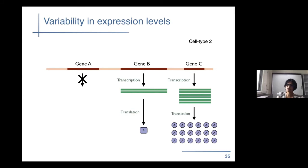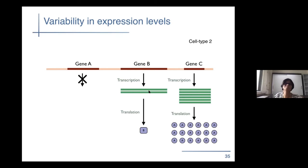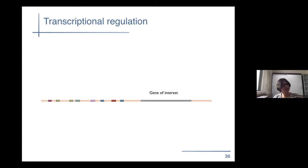A lot of this regulation or control is happening at the transcriptional level — at the place where the photocopies are being made — because there's no point spending effort making photocopies of recipes you're never going to use. So a lot of control happens at the very top level. A key question biologists are trying to understand is how cells control this. Because the recipe book is the same, how is the cell deciding which recipe to make photocopies of? It turns out a lot of this regulation is happening at the transcriptional level.